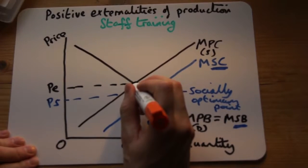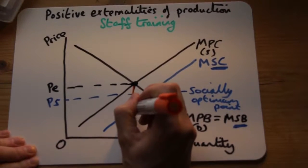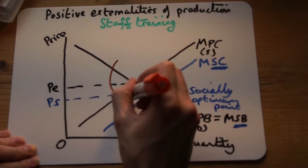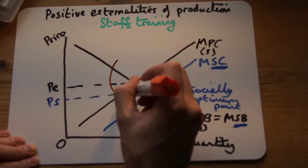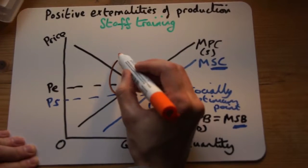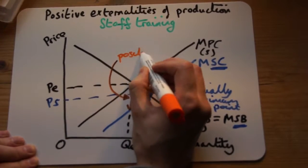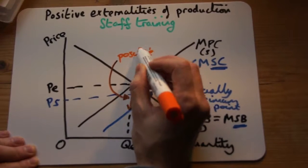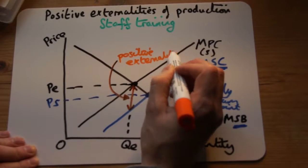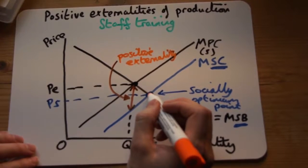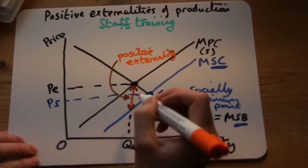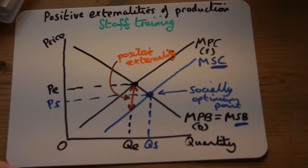At the free market point, we need to identify the positive externalities. The positive externalities from being at the free market point are shown by this arrow here — that is what we are gaining extra from the market from having the staff training. The business and the industry are not at the socially optimum point yet, so where we are now gives us these positive externalities, and we do have a market failure.